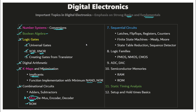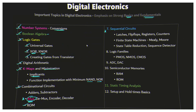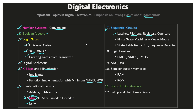Sequential circuits is the most important topic in the entire digital electronics. In this we have latches, flip-flops, registers, and counters — focus on each of these. Also look at conversion of flip-flops from one type to another, and counters — look at various problems in counters. Next, we have finite state machines: Mealy and Moore — look into state table reduction and sequence detectors.